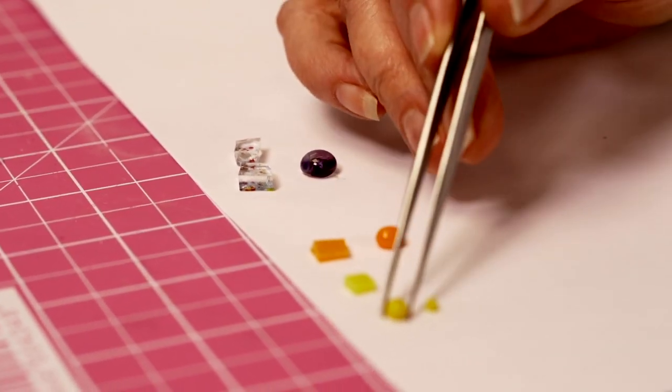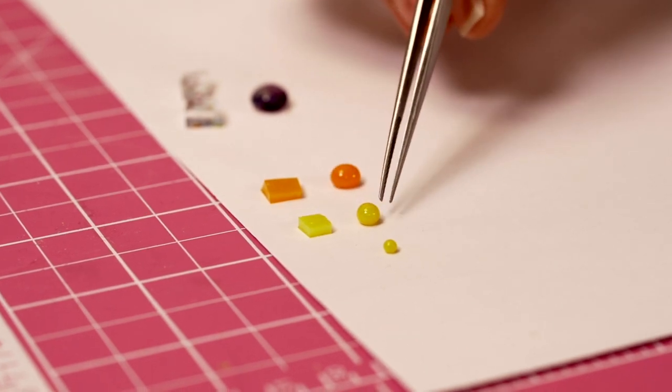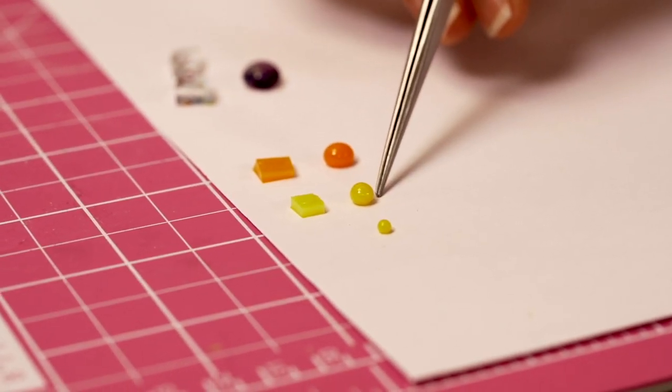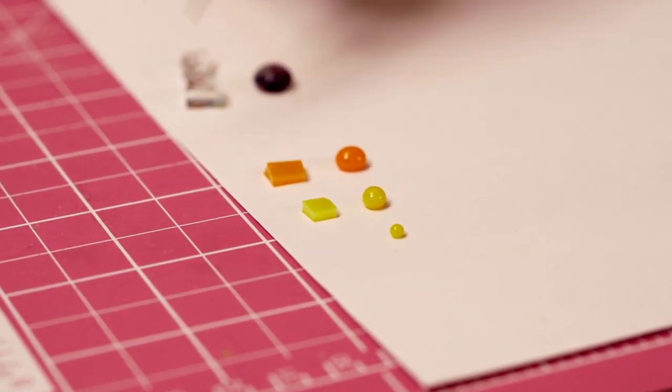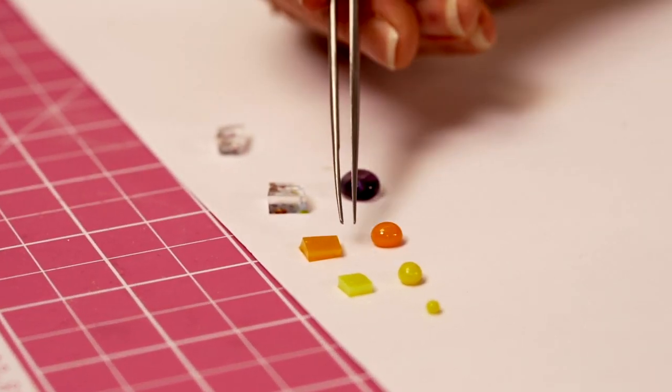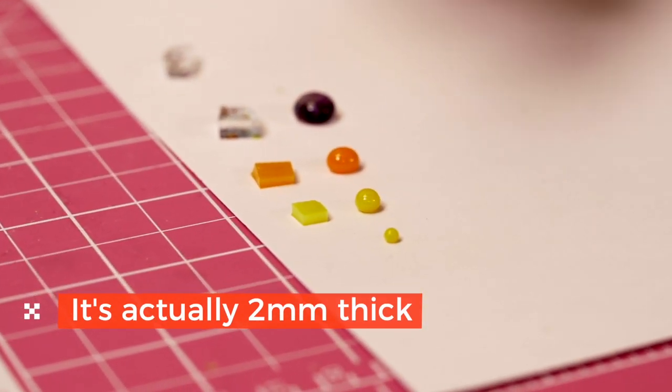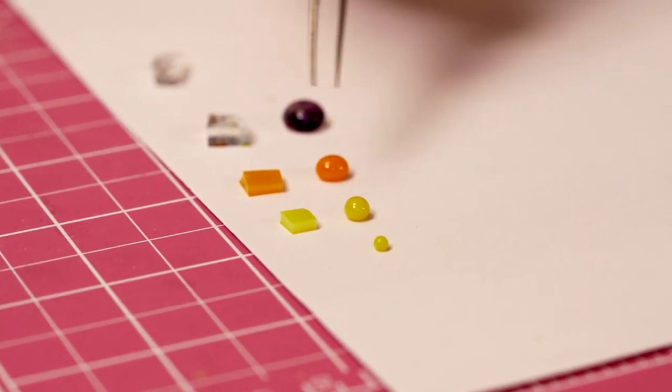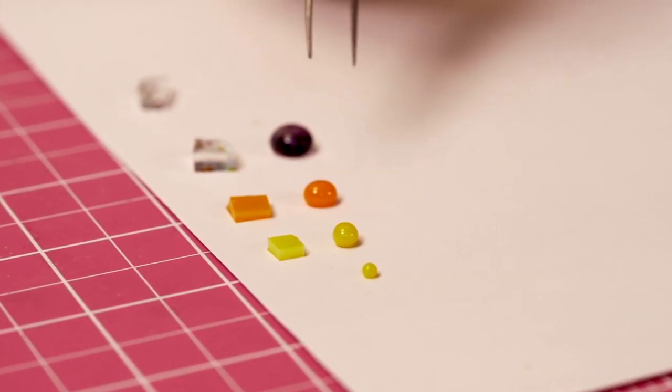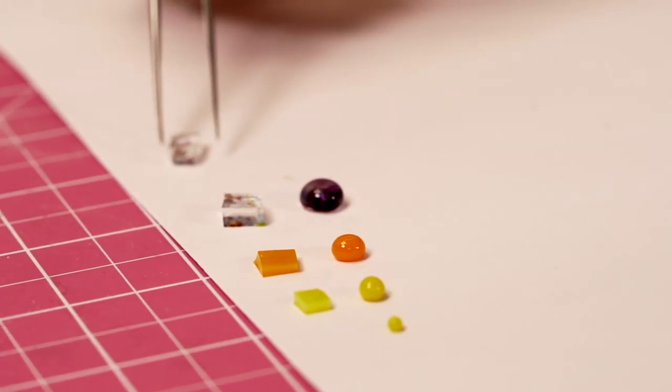So these pieces here that I'm showing you, this piece of glass will look like that once it's been full fused. Same here and same here. So this is three millimeters thick glass. It will pull itself up to six millimeter, and in doing so it will round off the edges. So this is why when you full fuse anything it curves those edges and rounds them off.